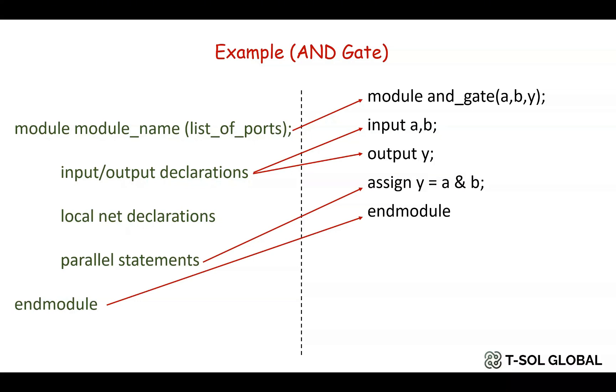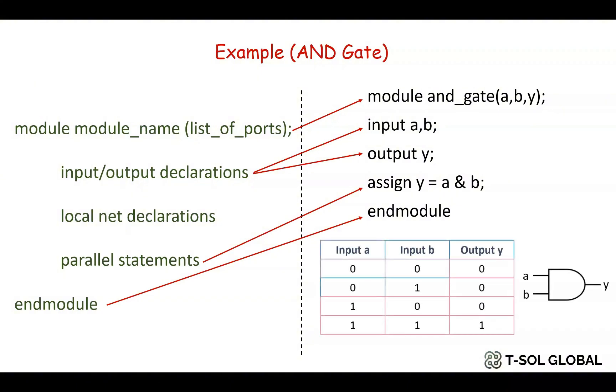We do not have any interconnections here. In Verilog we define the logics with assign command. So our logic is assign y is equal to a and b. Finally we end the code with endmodule command. Here you can see the truth table and schematic or symbol of AND gate.